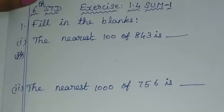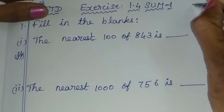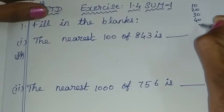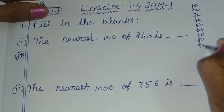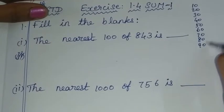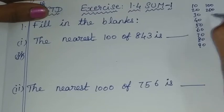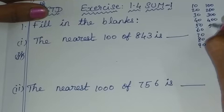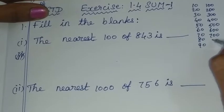First, let's understand what 'nearest' means. The nearest tens are: 10, 20, 30, 40, 50, 60, 70, 80, 90 — so the nearest ten starts at 10. The nearest hundreds are: 100, 200, 300, 400, 500 — up to 900, which rounds to 1000.